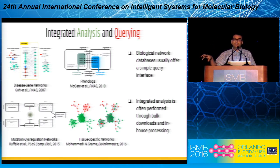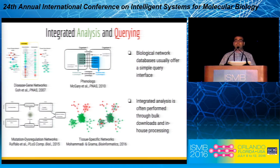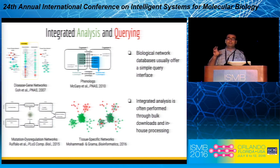The current approach is downloading data in bulk and then processing it in-house using sophisticated algorithms. The biological network databases do not provide complex queries; they don't provide the opportunity to query the database in an integrated way. They just provide very simple query interfaces, and we usually can't query biological network databases based on topological queries.